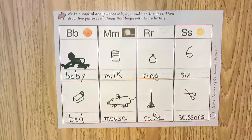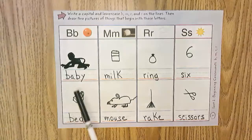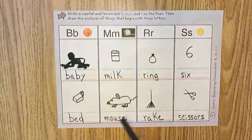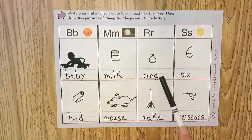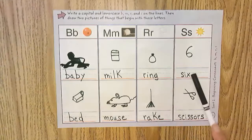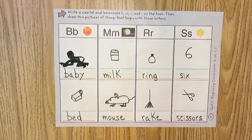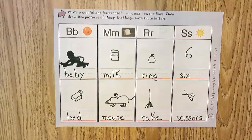So there is just one example of what you can do. I try to draw a baby crawling. Baby, bed, milk, mouse, ring, rake, six scissors. This is just an example so you guys can be creative. You can use the words that are on the word list on the back.